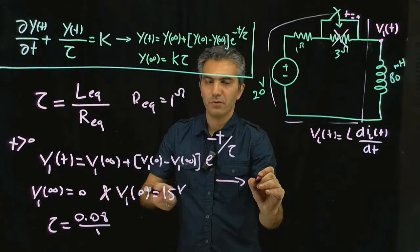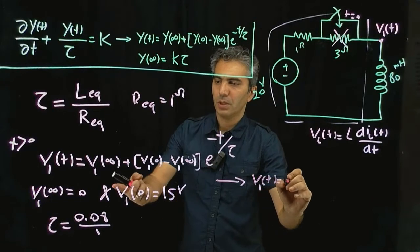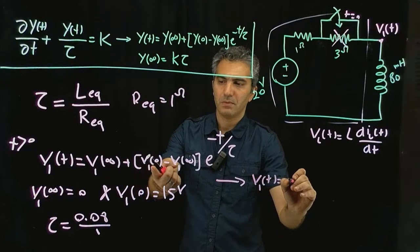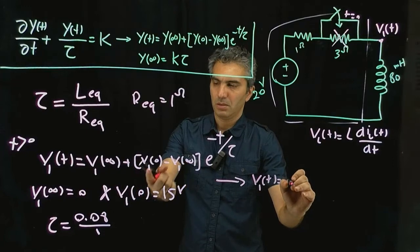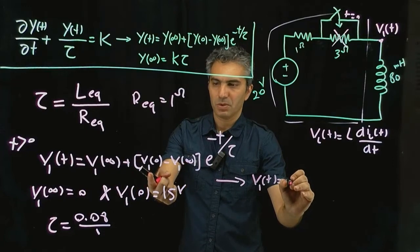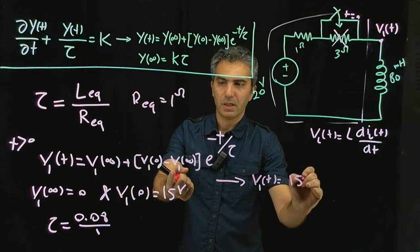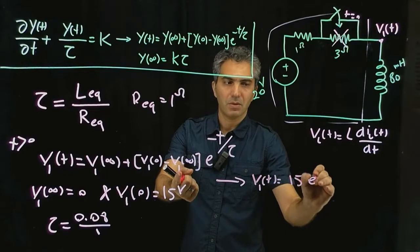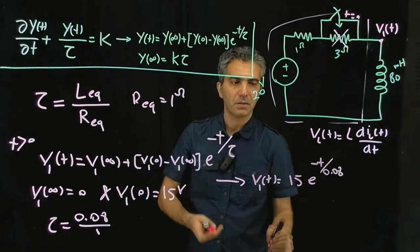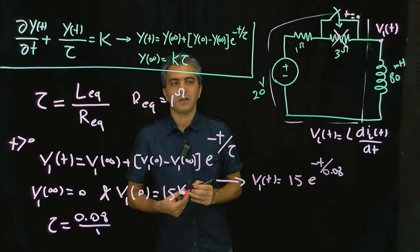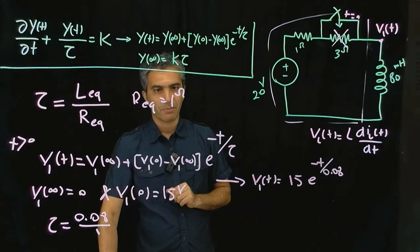Therefore, V1(t) = 0 + (15 − 0)·e^(−t/0.08) = 15·e^(−t/0.08). This is exactly the equation we calculated last time, confirming the shortcut method gives the same result.